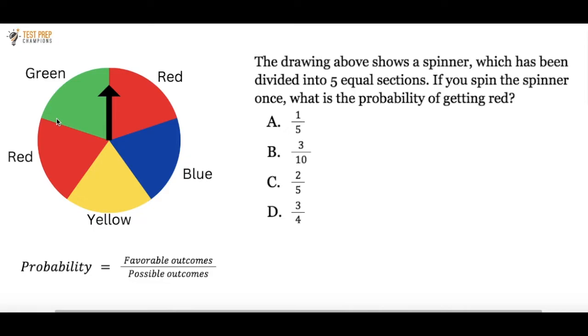So in this case, what is the probability of getting red? Well, how many chances are there to get red? There are one, two, there are two different chances to get red.